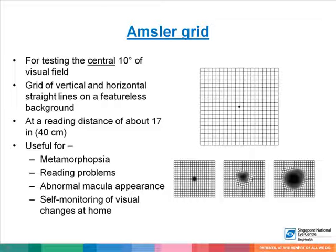The Amsler grid covers the central 10 degrees of visual field. It consists of vertical and horizontal straight lines on a featureless background, measured at a distance of about 17 inches or 40 centimeters. It is most useful when patients complain of metamorphopsia or reading problems, when the macula appears abnormal on examination, or to identify central visual field defects. It can also be given to patients for self-monitoring of visual changes at home.